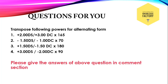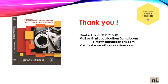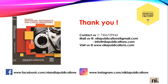Here are some examples for you. Transpose the following to the alternate form. First: plus 2 diopter sphere with plus 1.3 diopter cylinder at 135. Next: minus 1.50 diopter sphere with minus 1 diopter cylinder at 70. Third: plus 1.50 diopter sphere with minus 1.50 diopter cylinder at 180. Last: plus 3 diopter sphere with minus 2 diopter cylinder at 90. Please give your answers in the comment section. I am waiting for your answer. Thank you. For more videos, please subscribe to our channel Neatla online and put your valuable opinion in the comment section.